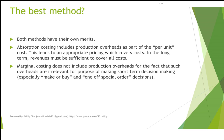Each method has its own benefits as well as issues. Absorption costing gives one very powerful advantage: overhead costs are fully accounted for in the cost of each unit. This means that whatever price is derived from the cost should cover all costs. In the long term, revenue must be sufficient to cover all costs — there is no other way about it.